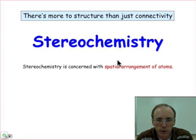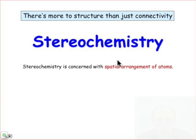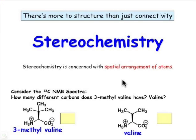Stereochemistry is the aspect of molecular structure that describes how atoms are arranged in three-dimensional space. This goes beyond the simple bonding connectivity idea, and I thought I would illustrate where we're heading in our study of stereochemistry with the problem on this page, asking how many different kinds of carbon atoms are in 3-methylvaline and how many different kinds of carbon atoms are in valine.